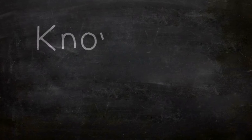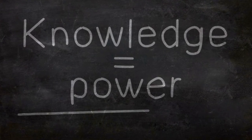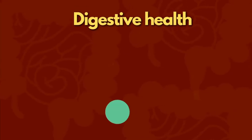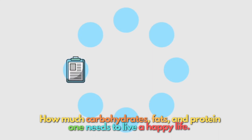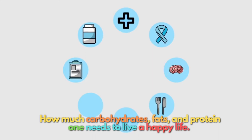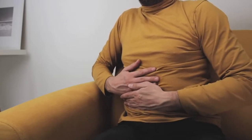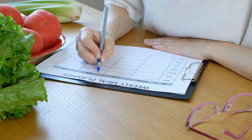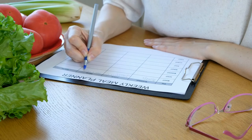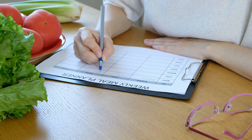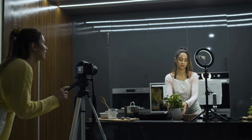Now let's move to our first niche: digestive health. You may start a blog in the gastrointestinal health niche and establish a brand covering everyday basics such as how many carbohydrates, fats, and proteins are required to live a healthy life. Most human diseases begin in the gut, so creating a blog that teaches readers about healthy food and gut health solutions is very valuable. In the United States, about 72% of people in 2000 reported having at least one gastrointestinal symptom.